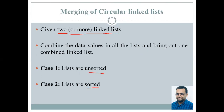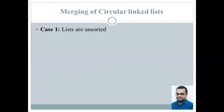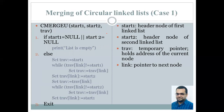Here we have considered case number one, that is lists are unsorted, and taken the example of two circular linked lists. The approach is generalized and can be extended to more circular linked lists. We have called our procedure CmergeU, meaning merging of circular linked lists where the linked lists are unsorted.